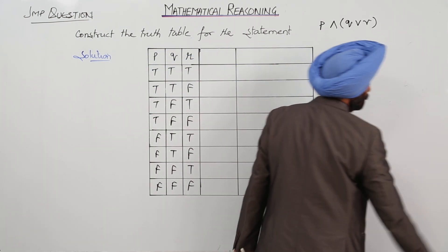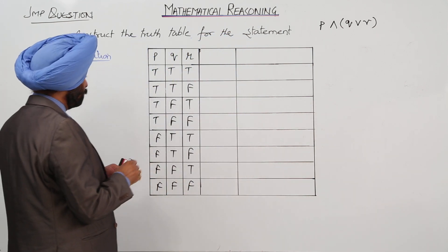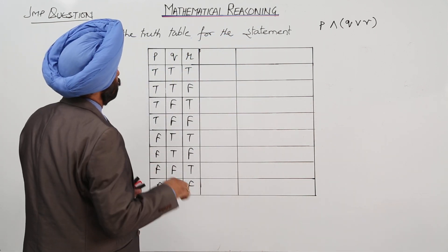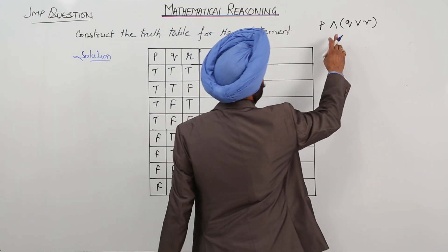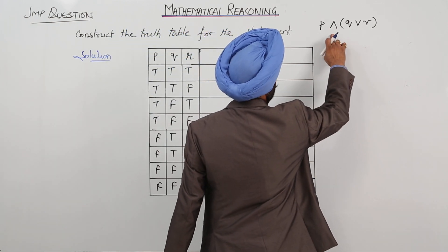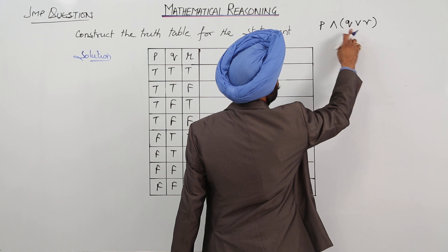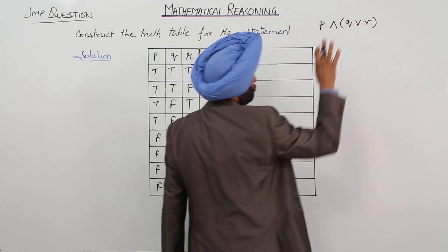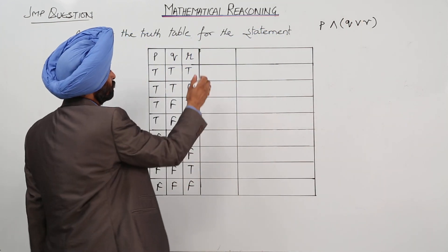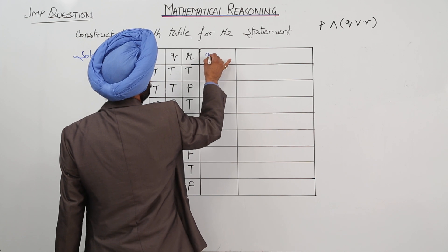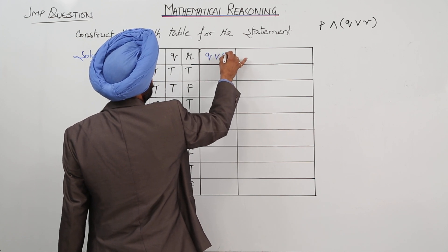Now, what we have to find is: first we have an AND in between one statement that is P, and Q or R. So the first thing we are going for is Q or R.